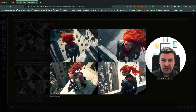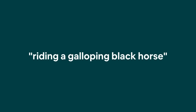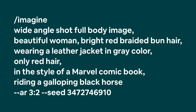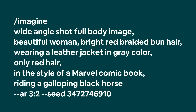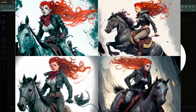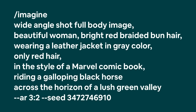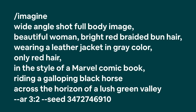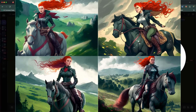Next, let's try something very different and place Carla on top of a horse. We're going to add riding a galloping black horse to the prompt: wide angle shot, full body image, and the rest of the previous prompt with riding a galloping black horse at the very end, removing the reference to beautiful woman looking down. This is already pretty nice. However, we're missing a background, so let's add some colour by adding across the horizon of a lush green valley. This shows how important it is to add more details to your prompts.